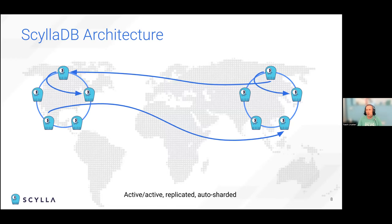This session will not be focused on the high availability architecture, which is of course very important in distributed databases and Scylla in particular — just not the center of this session, which is more about performance. I do want to spend a couple of minutes covering that, and then we can deep dive into one of the nodes of this distributed database and explain how we get to high performance.